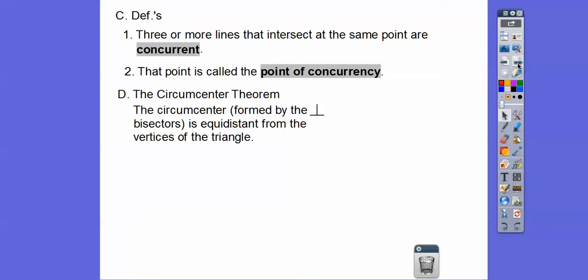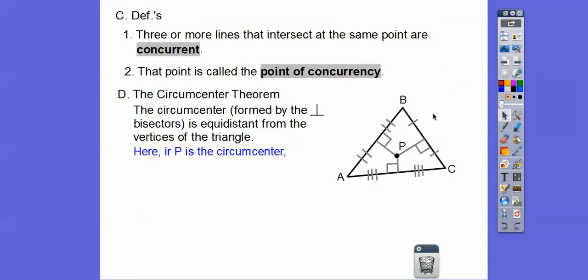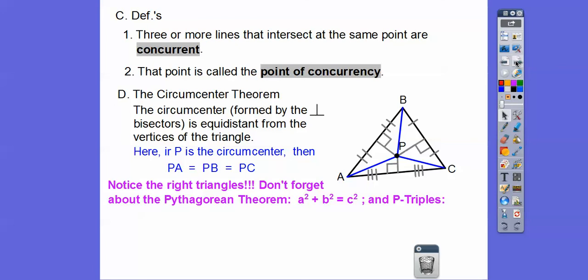The circumcenter theorem says that the circumcenter formed by the perpendicular bisectors is equidistant to the vertices of the triangle. The distances PA, PB, and PC are all radii of the circumcircle. P is our circumcenter because it's formed by the perpendicular bisectors — the right angle bisects the side, making this side equal to that side. So all those radii are equal: the length of PA equals the length of PB equals the length of PC. Notice the right angles — don't forget about the Pythagorean theorem, and we're going to see some Pythagorean triples.